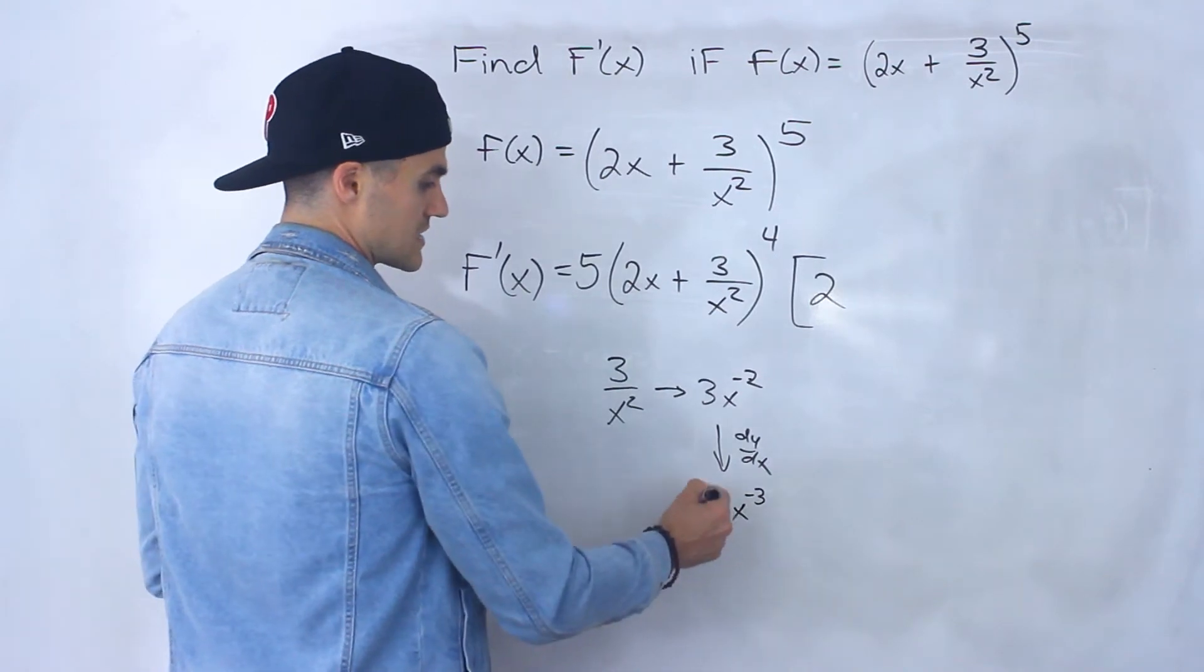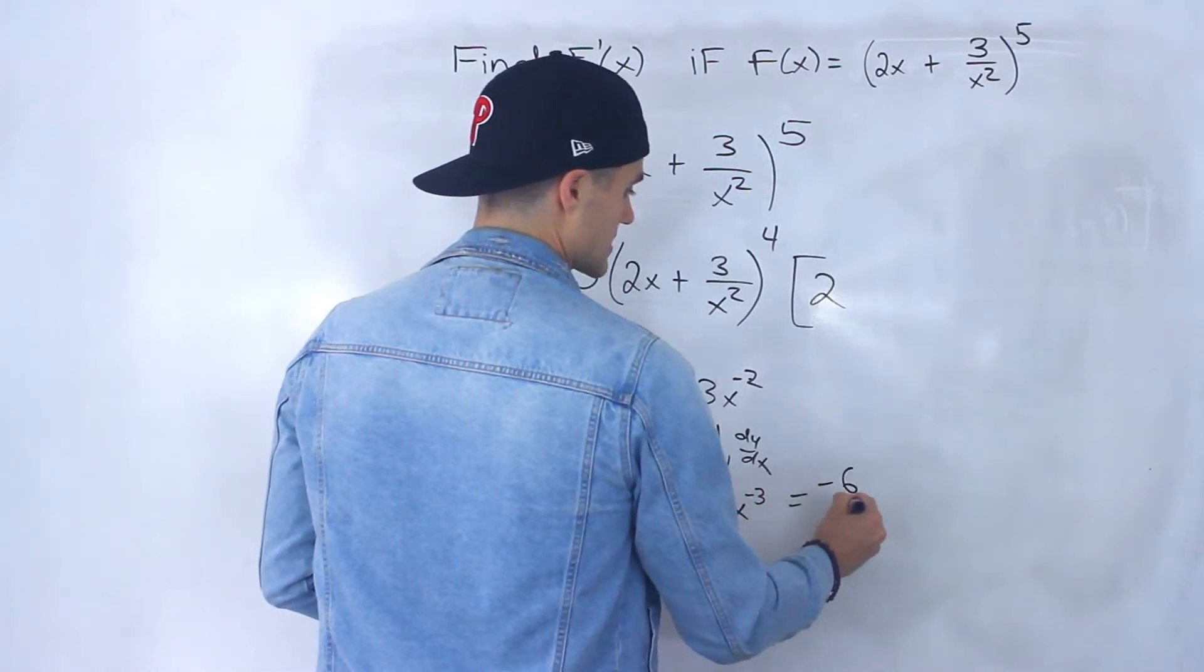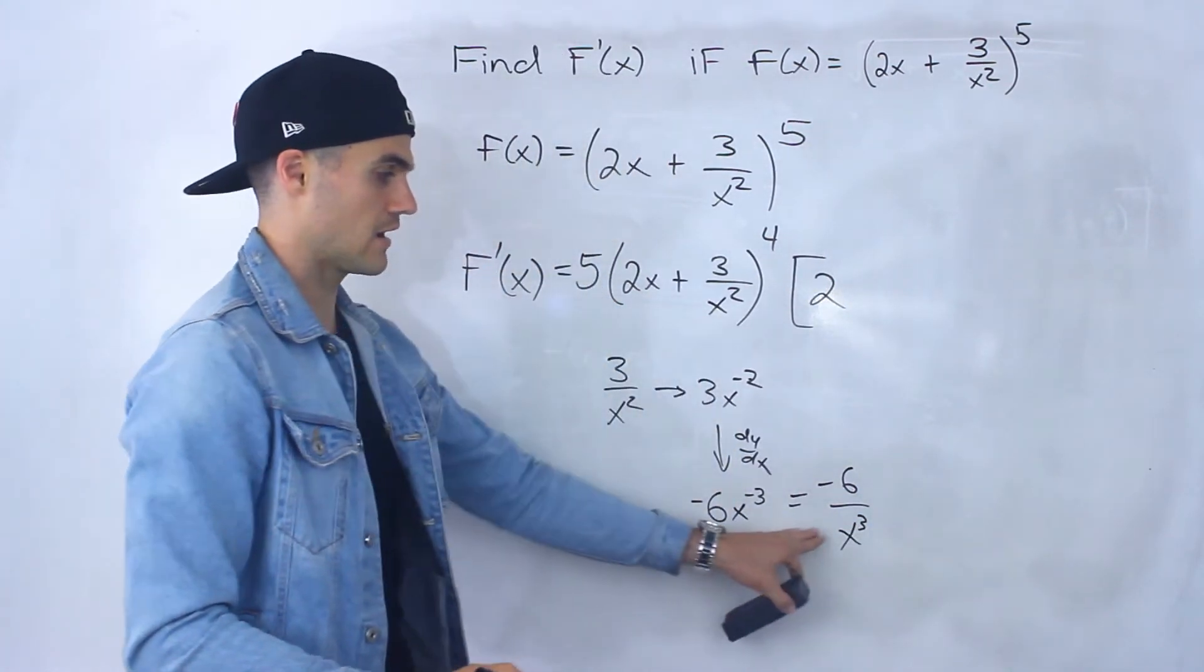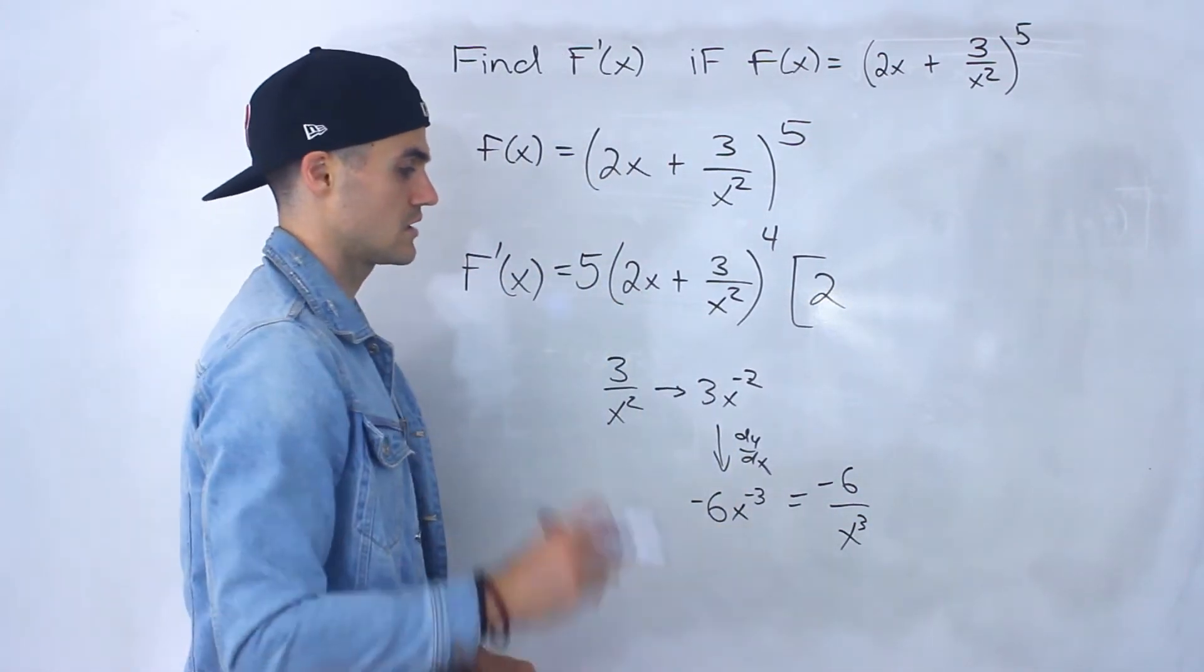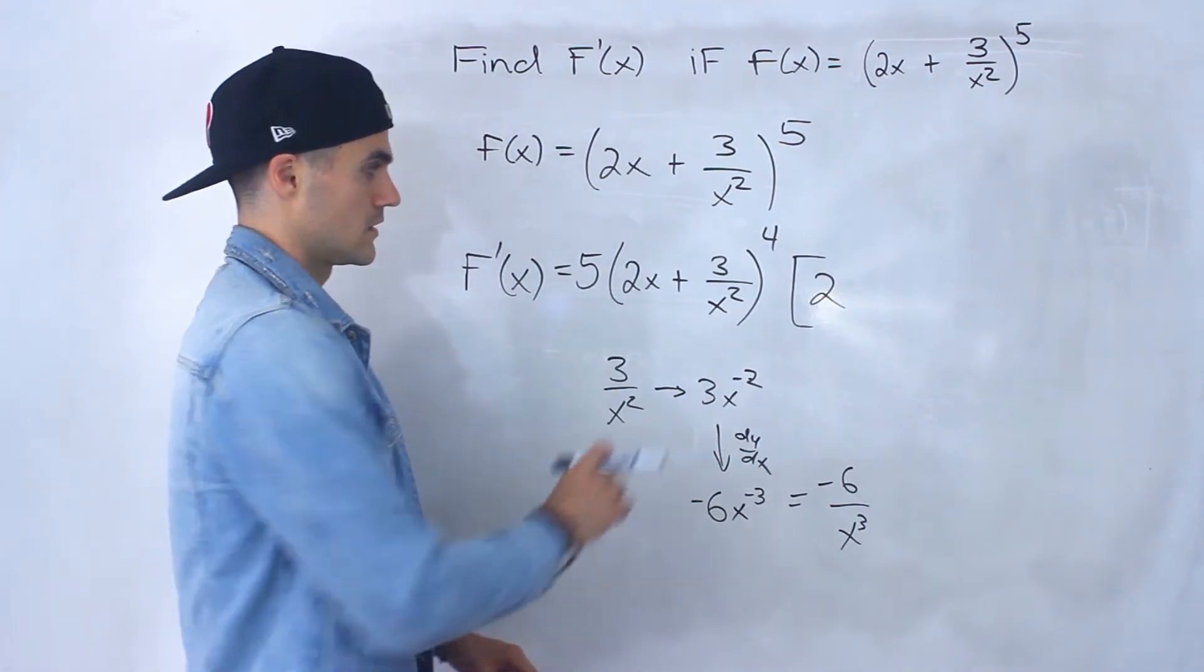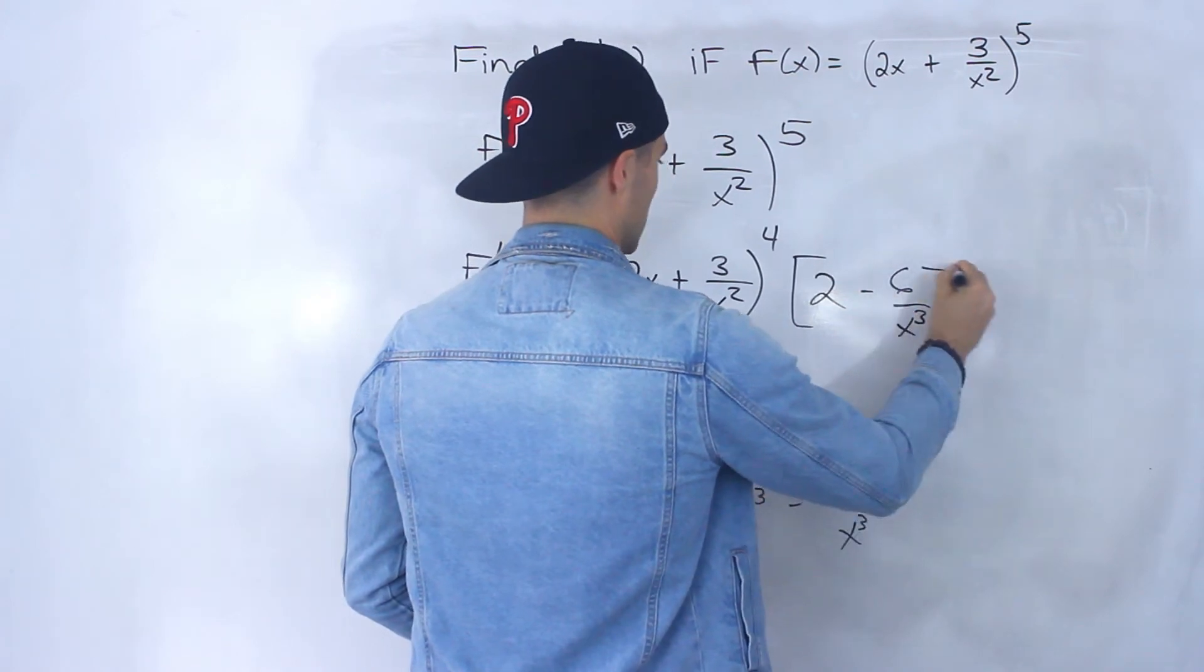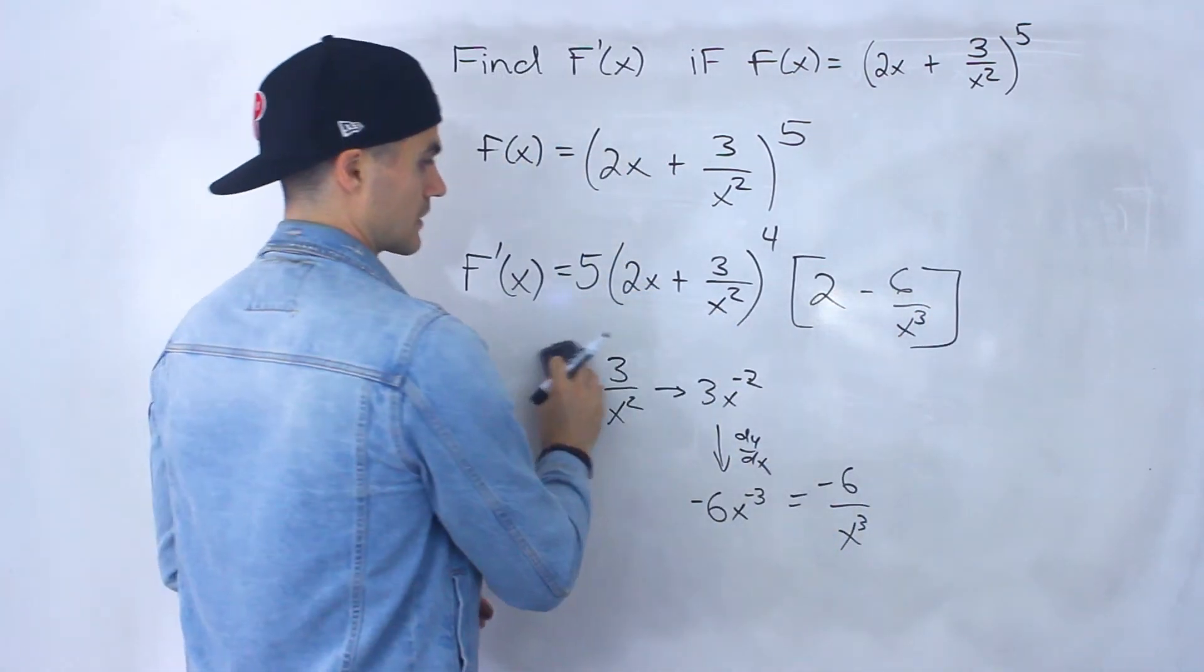Right? So negative 6 times x to the negative 3. And we can rewrite this as negative 6 over x to the 3. If we bring that x to the negative 3 down, the exponent turns positive. So here we would end up with minus 6 over x to the 3 like that.